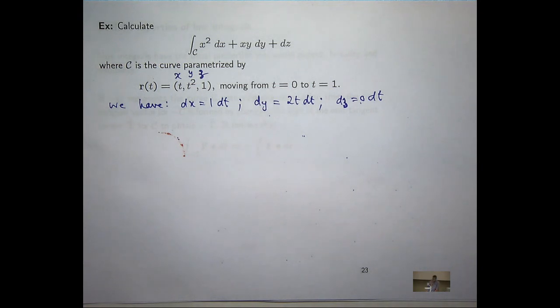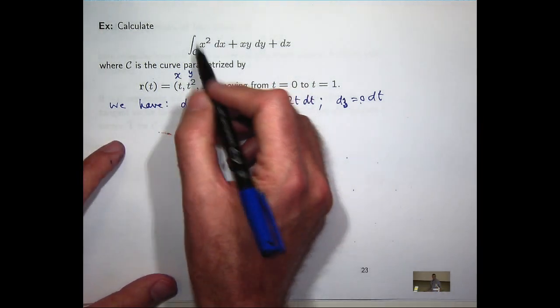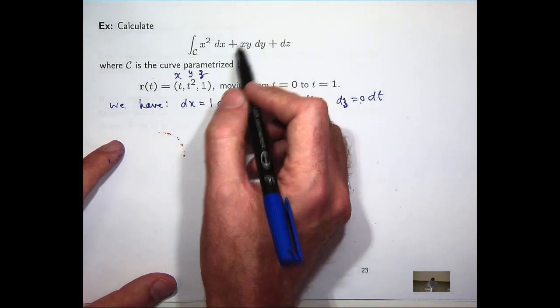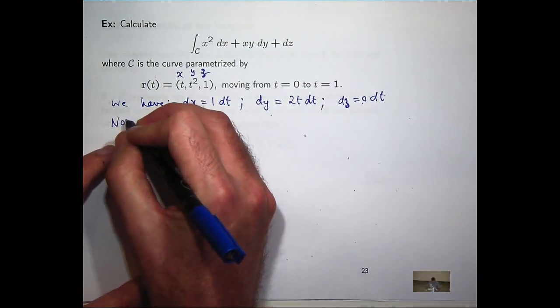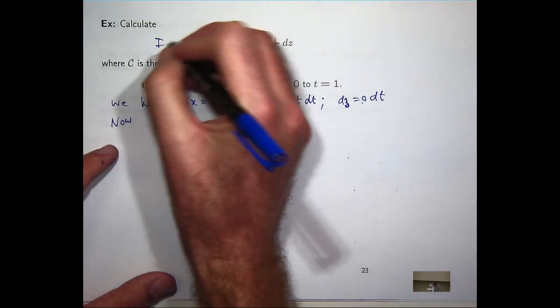So what I can do is just sub those in. I'm going to replace x with t, y with t squared, and z with 1. Let's call this i.